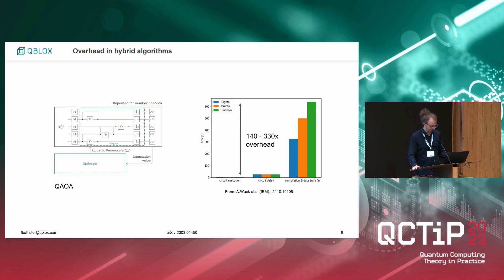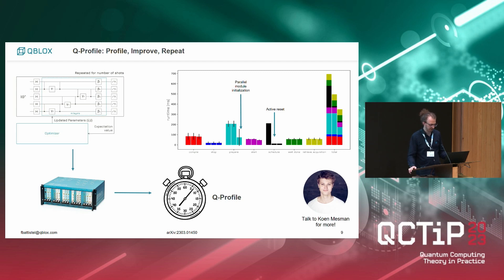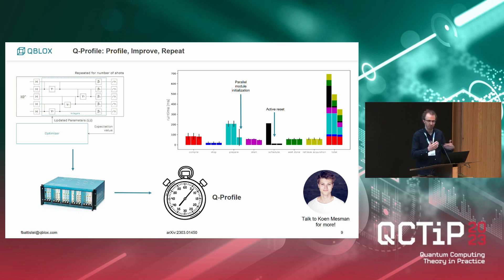Our approach has been to make the first steps to improve this. We characterize in detail the various steps that happen in the electronics and profile it with an open-source software tool we call Q-profile. There are various steps: you compile, prepare the modules, collect measurements, and so on. We characterized these and made two improvements: with active reset we save a lot of time waiting for T1 decay, and we parallelize the initialization of the modules. There is more to come — that's our method to approach this problem.